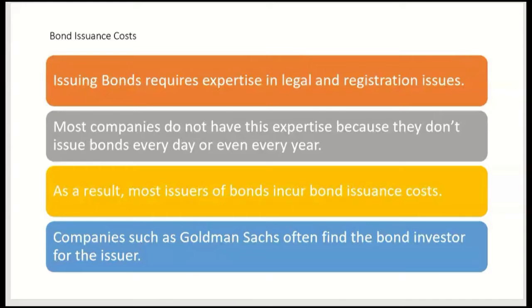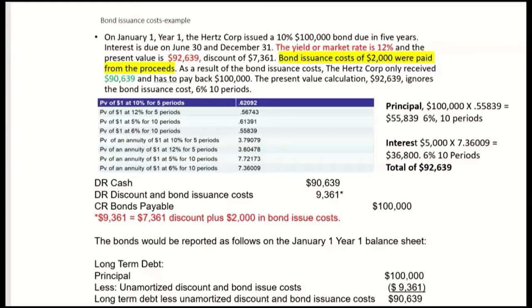When the issuer hires a company like Goldman Sachs to find the bond investors, that's when you incur bond issuance costs. Let's look at this example from the previous video, but we're going to add bond issuance costs. On January 1st, Year 1, the Hertz Corp issued a 10%, $100,000 bond due in five years; interest is due June 30th and December 31st.